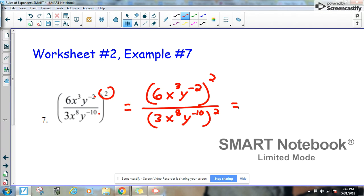And in order to do that, we just have to basically raise everything to the power of 2. So 6 raised to the power of 2 is 6 times 6, which is 36. x to the 3rd raised to the power of 2 is multiplication of exponents, 3 times 2 is 6. y to the negative 2 times 2 is negative 4. 3 raised to the 2nd power is going to be 9. x to the 8th raised to the 2nd power is multiplication again, so 16. And y to the negative 10 to the 2nd is going to be multiplication again, negative 20.